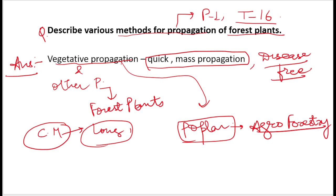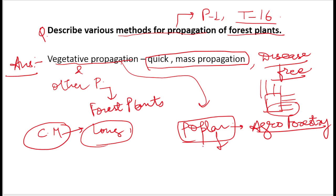When you move from Delhi to the Uttarakhand side, you can see trees on the roadside. The maximum of these trees used by farmers for agroforestry is Populus deltoides — that is its biological name. It is a quick-growing tree and it gives returns in less time as compared to other trees.